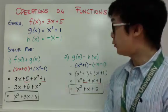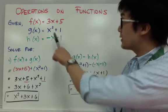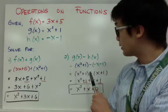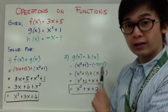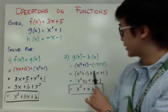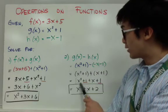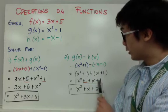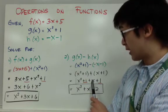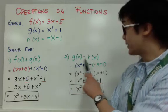For number two, g of x minus h of x. If we can add functions, we can certainly subtract them. g of x is x squared plus 1, and h of x is negative x minus 1. Distribute your negative sign, then proceed to addition. So you have x squared plus 1 plus x plus 1. Combining like terms — only the constants 1 and 1 can combine, since x squared and x are not like terms — you get x squared plus x plus 2.